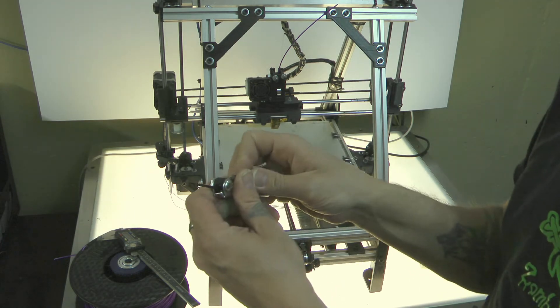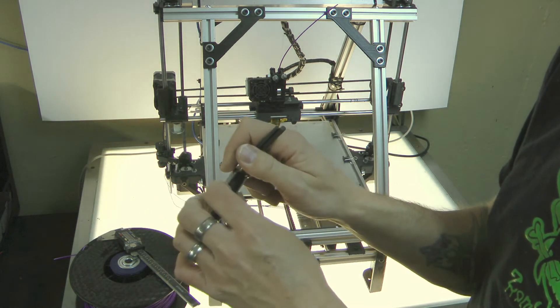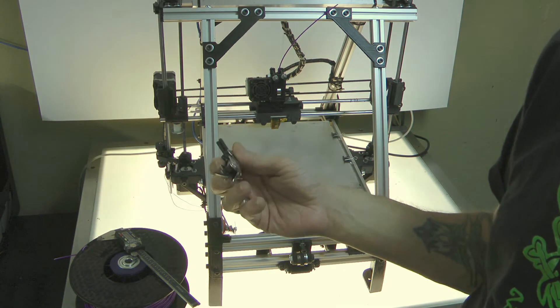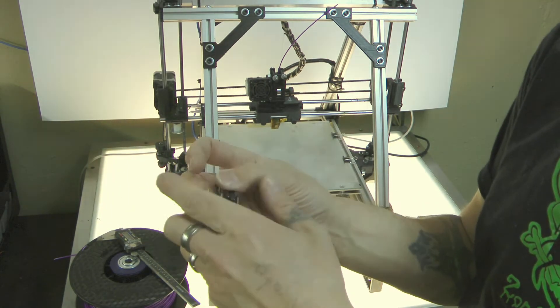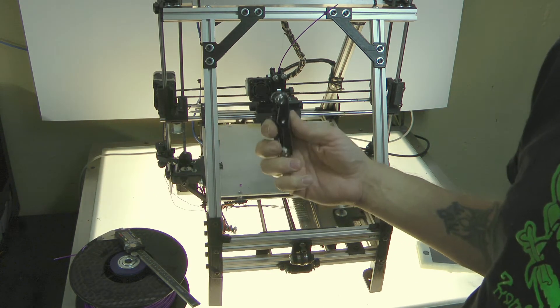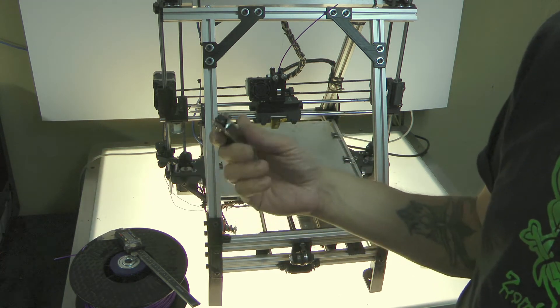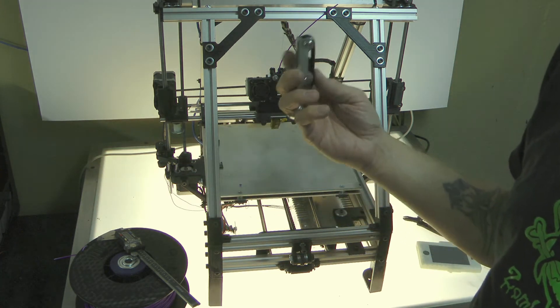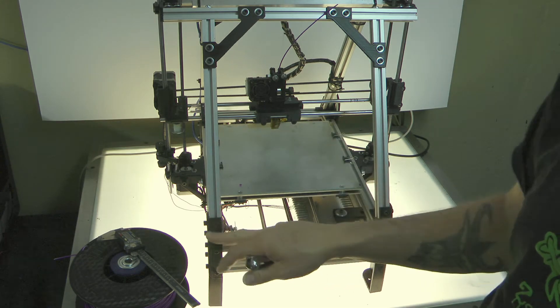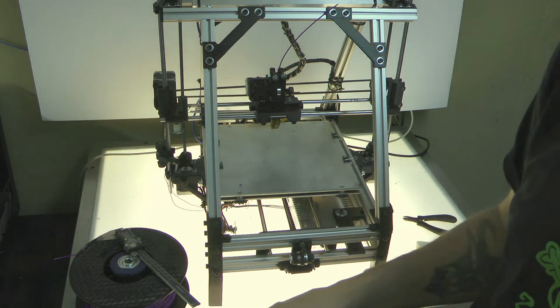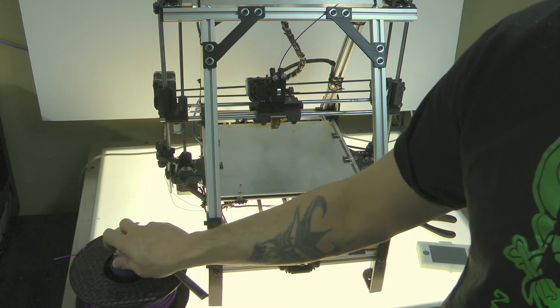Allen wrenches. I like the Swiss Army MacGyver type of deal. So this has all the millimeter ones. But the one that you're going to be using all the time is the 5 millimeter and the 2.5 millimeter. So those will handle all the screws and sockets if you want to start augmenting right away.